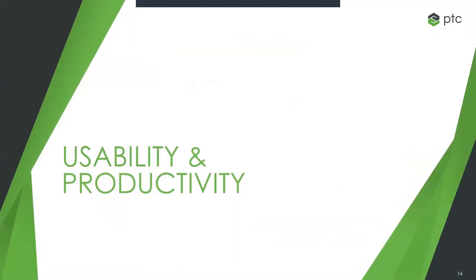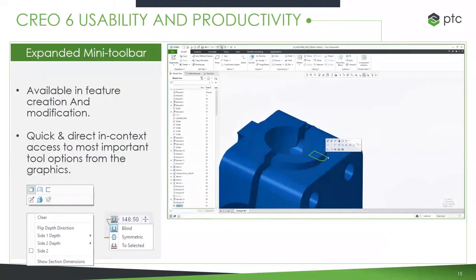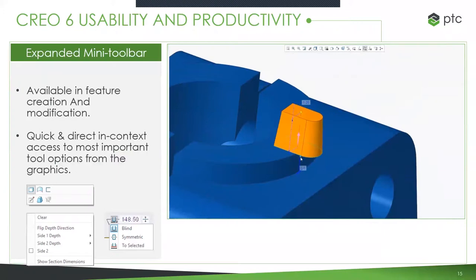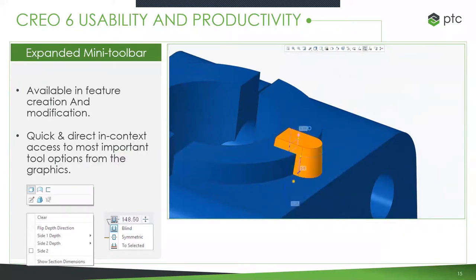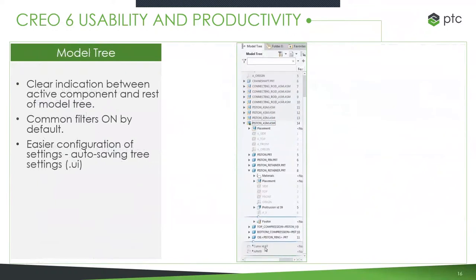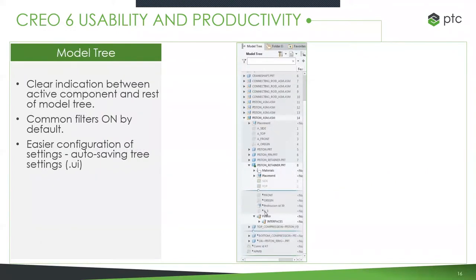Getting into some base capability updates and usability updates — the mini toolbar has seen further expansion. It's now available in feature creation and modification, and it's context-sensitive, so it knows what you're doing and gives you the things you're most likely to need. It shows the most important tool options so you can do a lot more from the mini toolbar without going up to the full toolbar. In the model tree, there's now a clear indication between active and non-active components — it highlights active ones and grays out the rest.